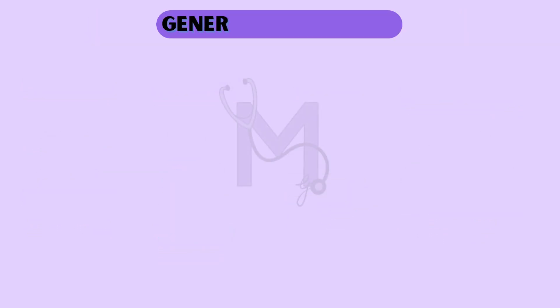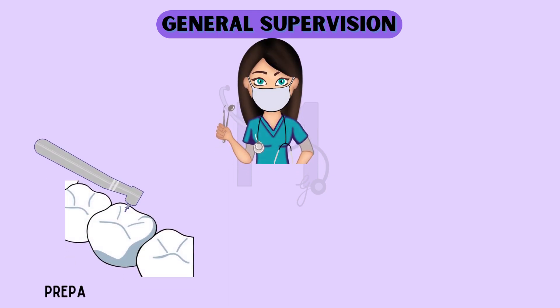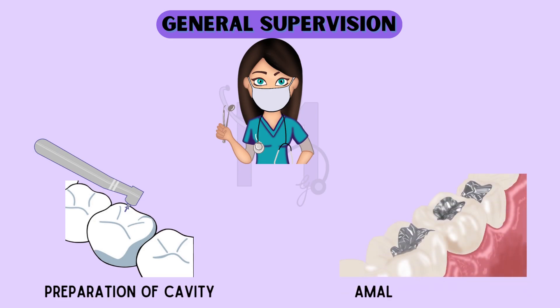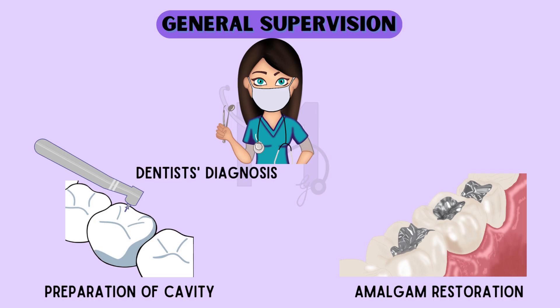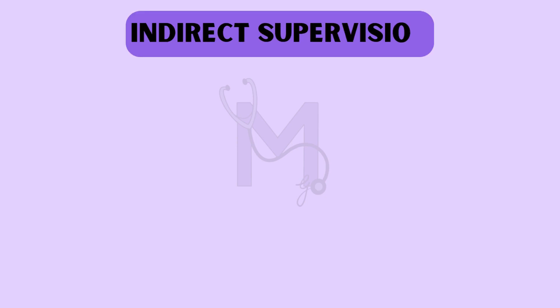Talking about general supervision, the dentist authorizes certain procedures like the preparation of a cavity and filling it with amalgam restoration, which is then carried out by the auxiliary following the diagnosis and treatment plan put forward by the dentist. An example of this is a school dental nurse who works under the general supervision of the dentist.